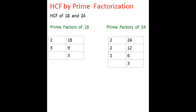For 24, divide by 2, answer is 12. Again divide by 2, answer is 6. Divide by 2, answer is 3. 3 is a prime number, so we stop here.